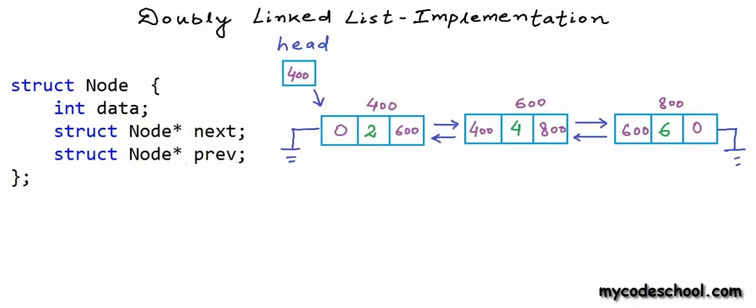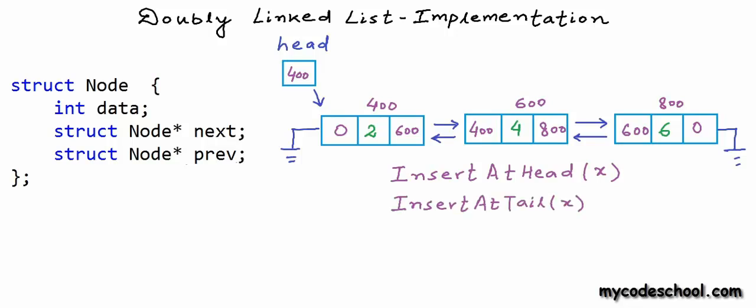In my implementation, I am going to write these functions: a function to insert a node at the beginning or head of the linked list, taking an integer as argument; another function to insert a node at the tail; one function to print elements while traversing from head to tail; and another to print elements in reverse order from tail to head. The reverse print function will validate whether the reverse link for each node is created properly.